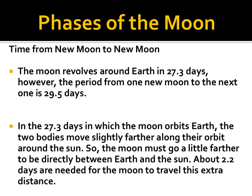In a perfect system without the Earth moving, it would take 27 and a third days for the moon to rotate around the Earth. However, because the Earth orbits the Sun, it takes 29 and a half days to go from one new moon to the next — about two and a quarter extra days. That's why sometimes you see the moon rising in the morning or in the middle of the afternoon.